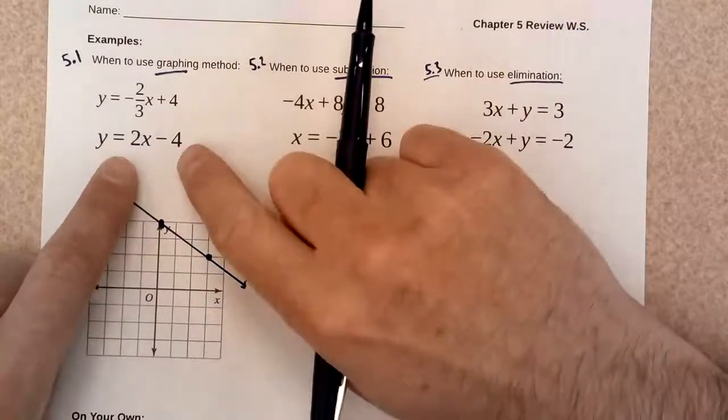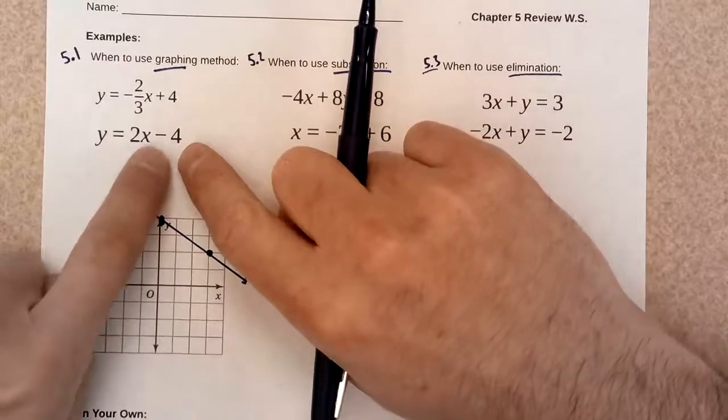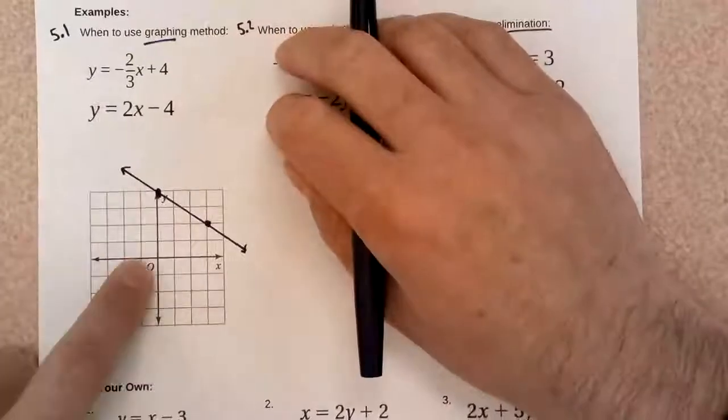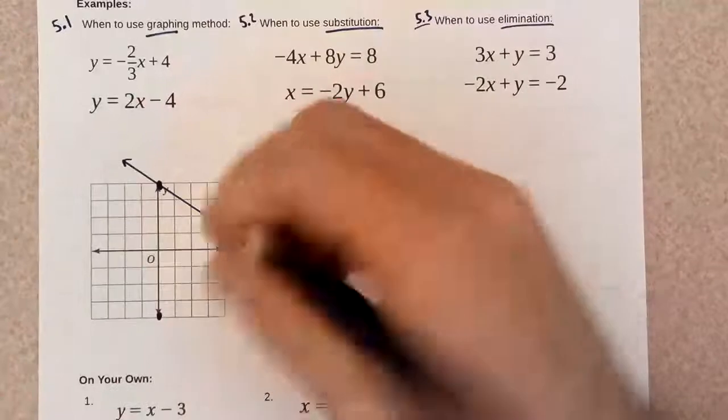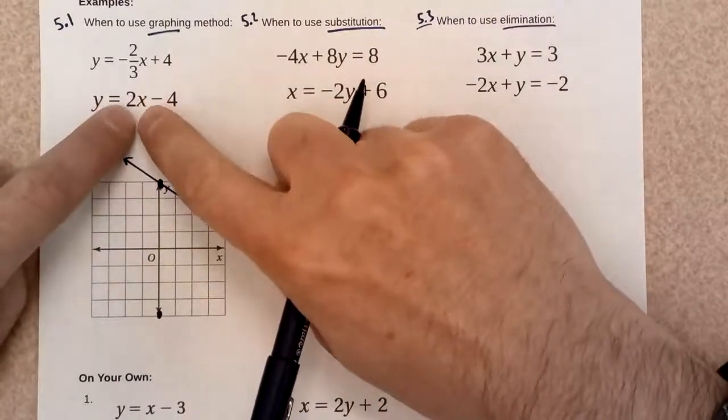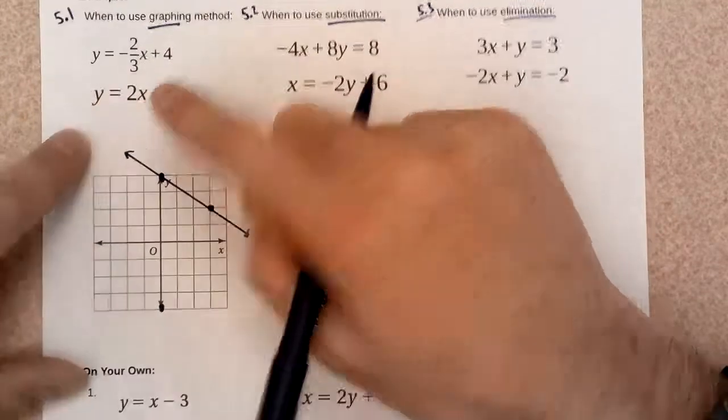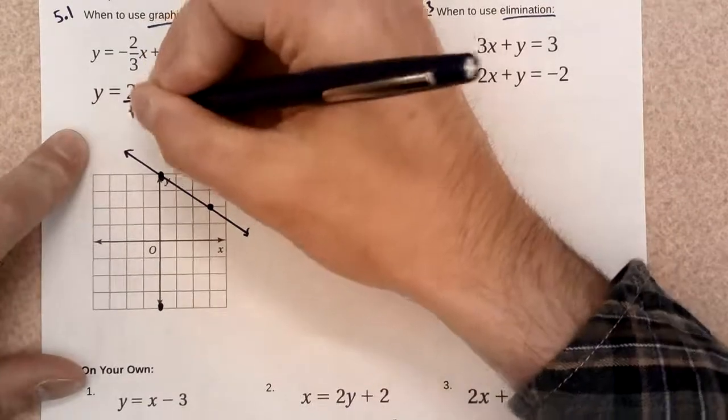If I want to graph this second line, I'm going to start at negative 4 on the y-axis. So, negative 1, 2, 3, 4. And a slope of 2. Just so you know, if it's not a fraction, you can just give it a denominator of 1.